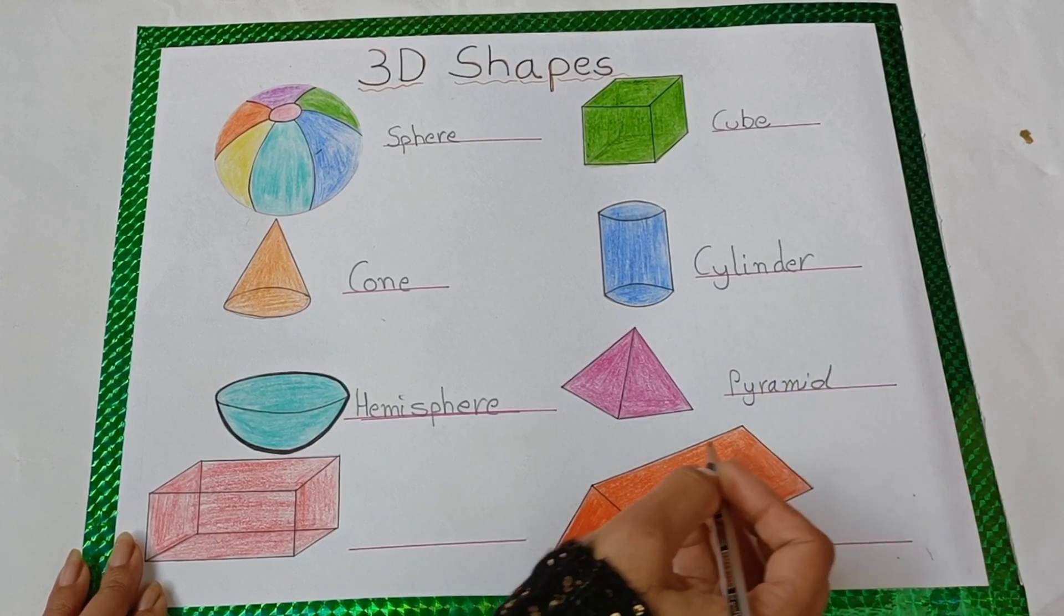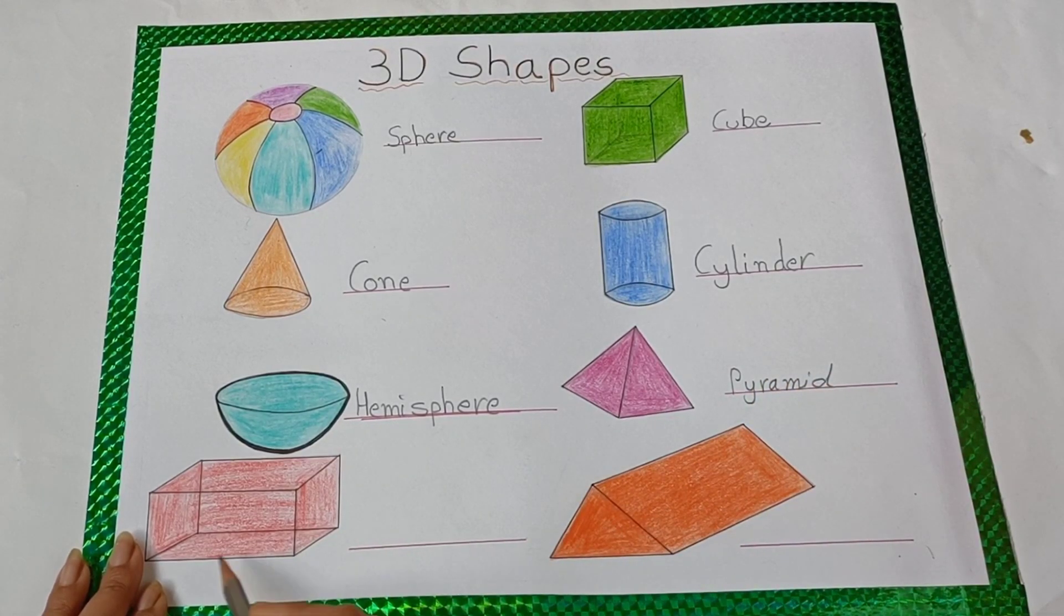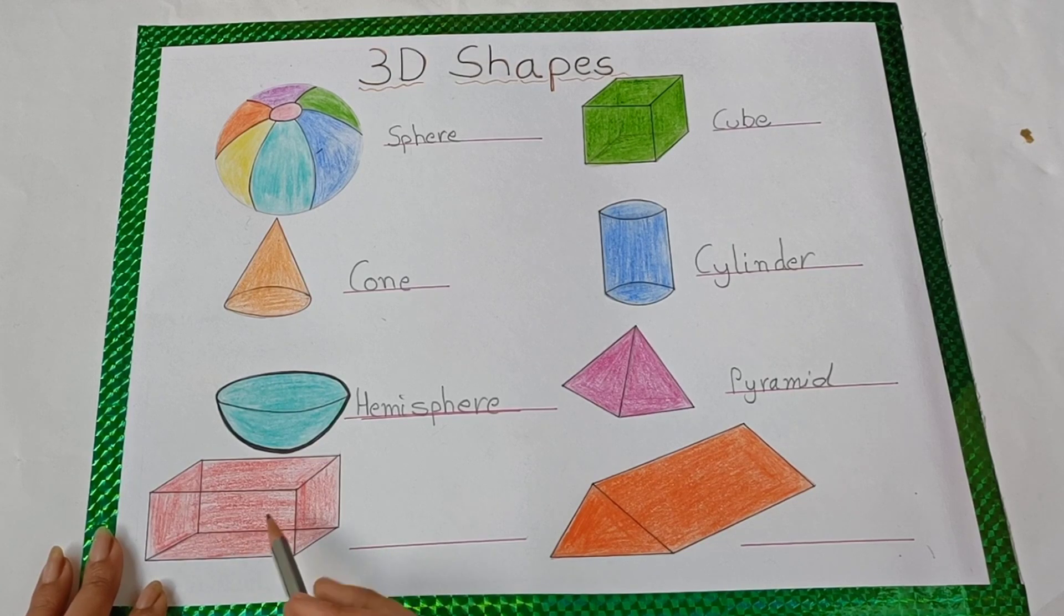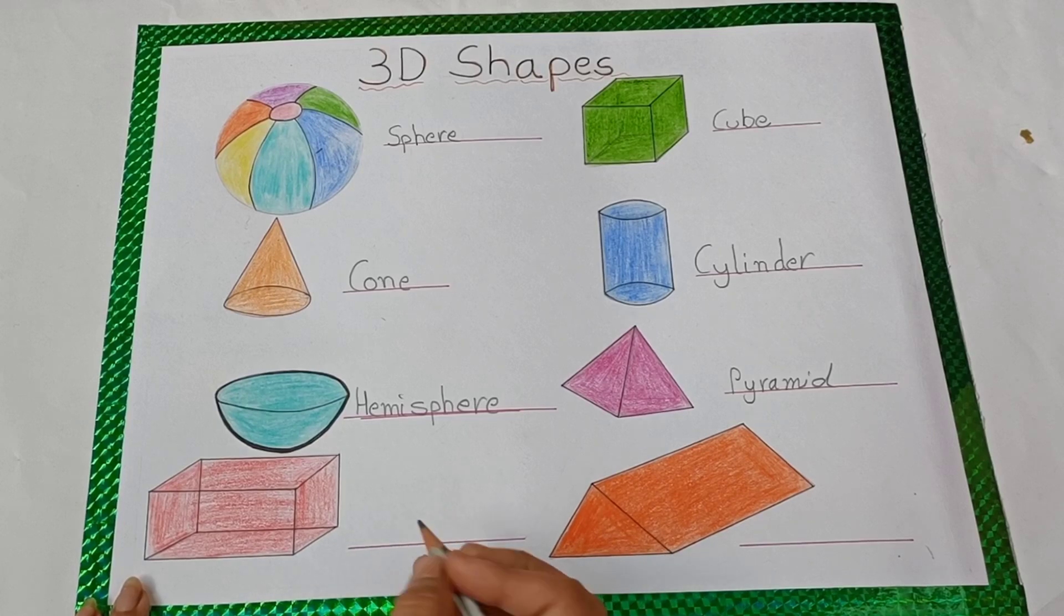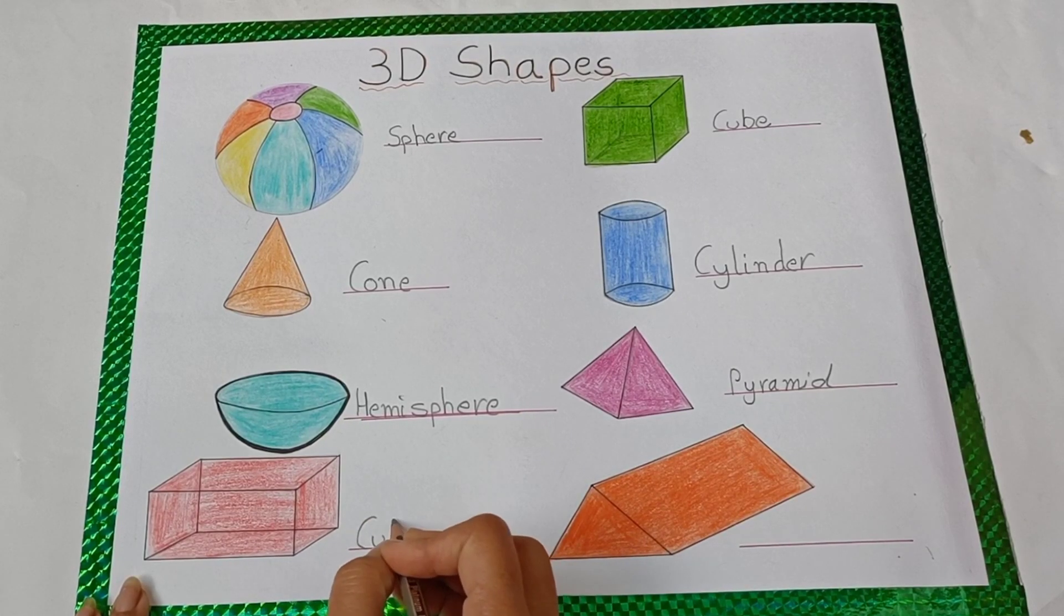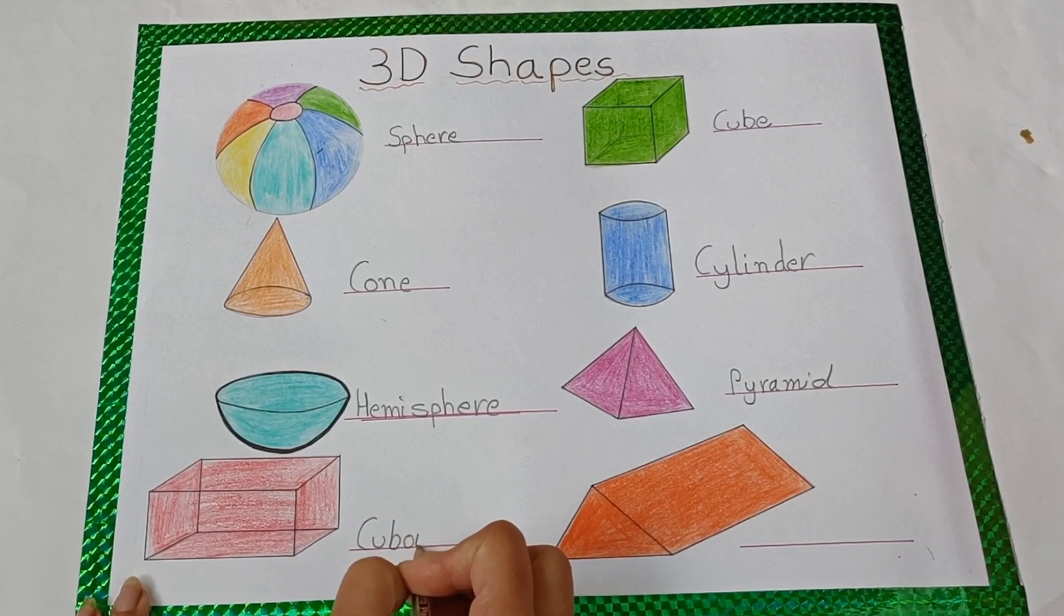The next shape is rectangular, three-dimensional structure. This is a cuboid. Spelling is C-U-B-O-I-D. Cuboid.